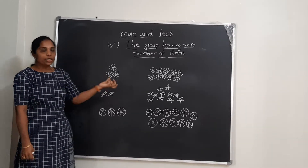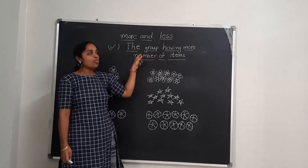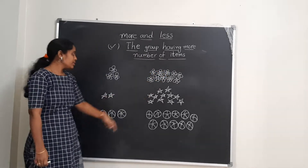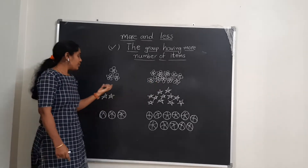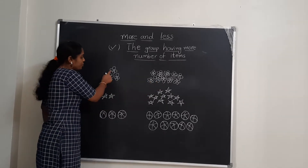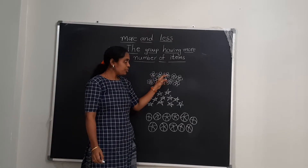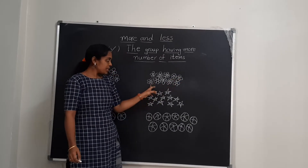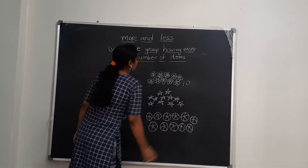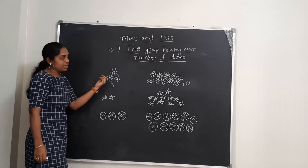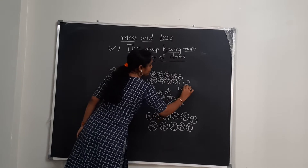Here I am dividing the objects into two groups. You have to pick the group which is having more number of items. Here I am having flowers in two groups. Here there are one, two, and three flowers in this group. Here: one, two, three, four, five, six, seven, eight, nine, ten. Which is more? Here the count is three and here the count is ten, so you have to pick this group.